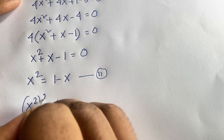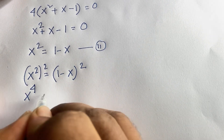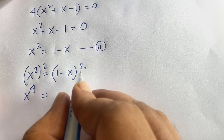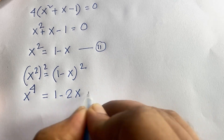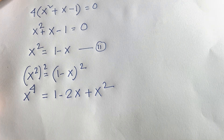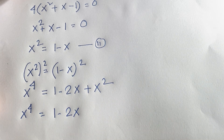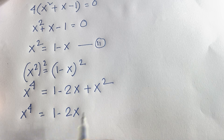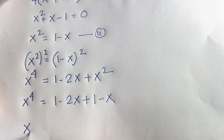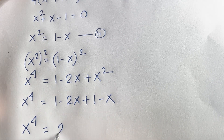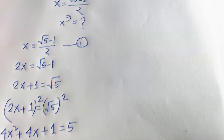Now I square both sides of x² = 1 minus x again. It will be x to the power 4 equals (1 minus x)², which by the identity (a minus b)² = a² minus 2ab + b² gives 1 minus 2x plus x². Recalling that x² equals 1 minus x, we substitute to find x to the power 4 is equal to 2 minus 3x.